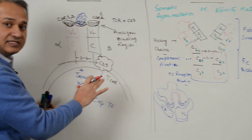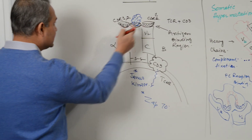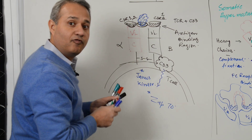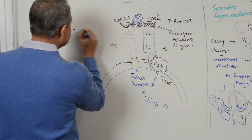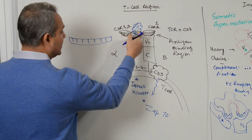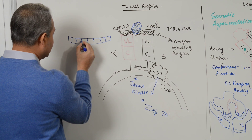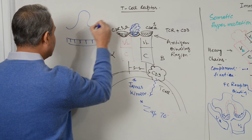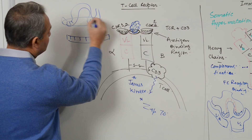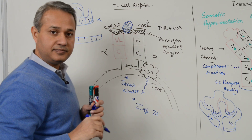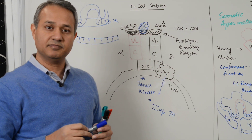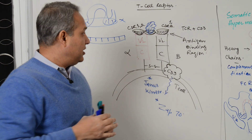For a T cell receptor, the antigen cannot be folded — it must show a straight, linear sequence of amino acids to connect with the receptor. A folded antigen cannot connect with the T cell receptor binding site. So the T cell receptor binding site is simpler compared to the immunoglobulin binding site.